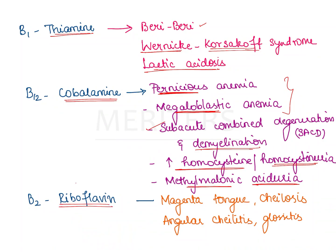The last option is B2, riboflavin. Riboflavin has FAD and FMN as its active coenzyme forms. Riboflavin deficiency is very rare because it is produced by the flora in the body and is also provided in the diet. If deficiency does occur, it results in a magenta-colored tongue, cheilosis — that is inflammation of the lips — angular cheilitis seen at the commissures of the mouth, and glossitis, which is inflammation of the tongue.